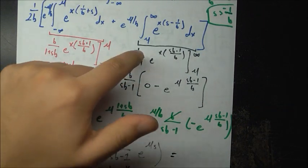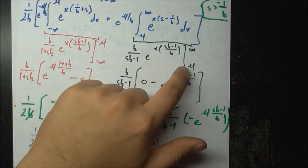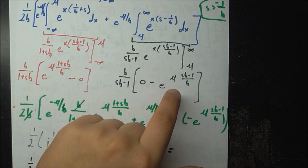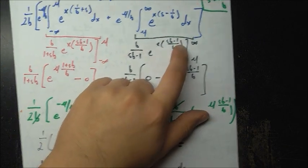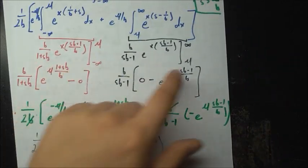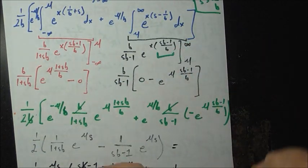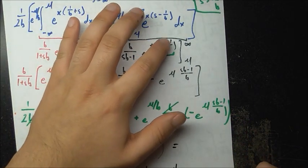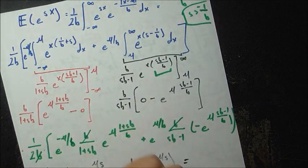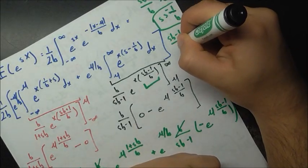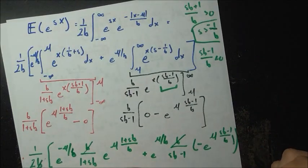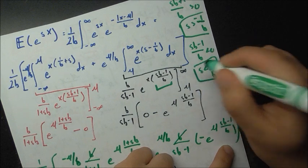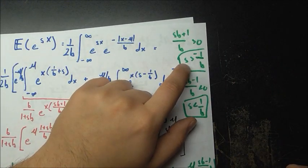We get a similar condition from the other integral, where we plug in positive infinity. We need the coefficient s·b minus 1 over b to be negative, so the exponential goes to zero and we get convergence. This gives the condition s·b minus 1 over b must be negative, meaning s must be less than 1 over b.